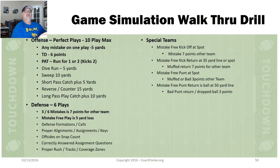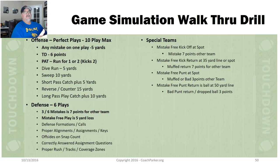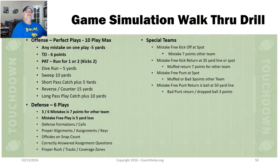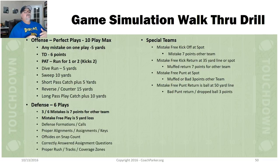For special teams, a mistake-free kickoff is the goal. If there's a mistake on the kickoff — for example, kicking it down the middle of the field between the hashes instead of directionally toward a sideline — that's seven points for the other team. A muffed kick return is also seven points for the other team; a good kick return puts the ball at the 35. A mistake-free punt stays on the spot; any muffed or bad punt is three points for the other team. On punt return, if they drop the punt it's three points; otherwise the ball goes to the 50.